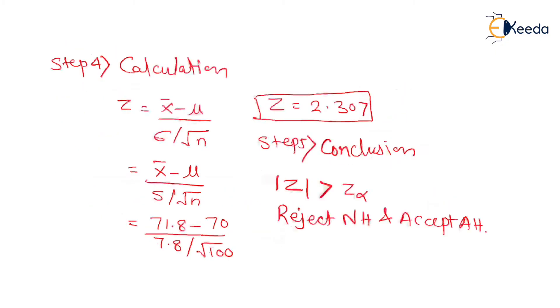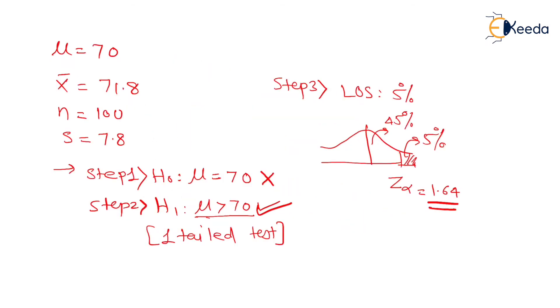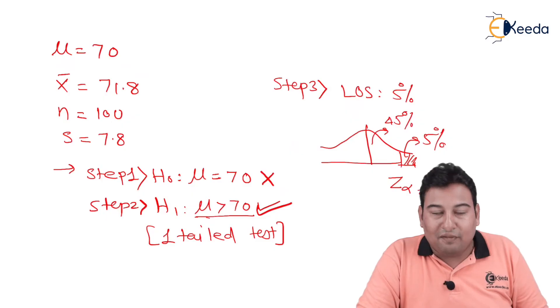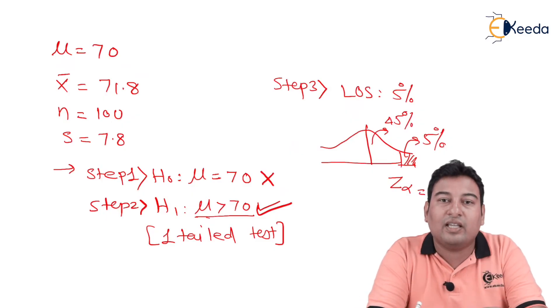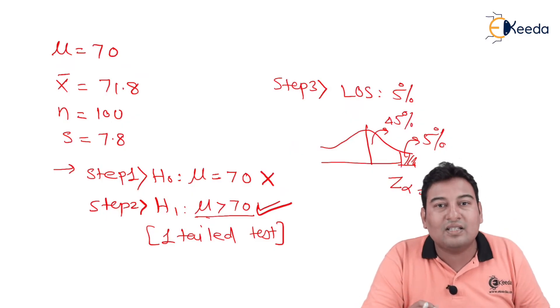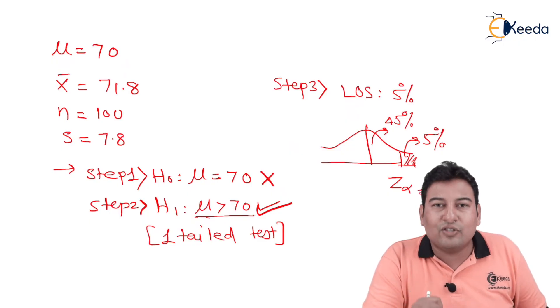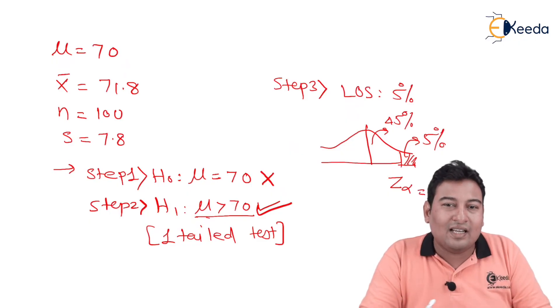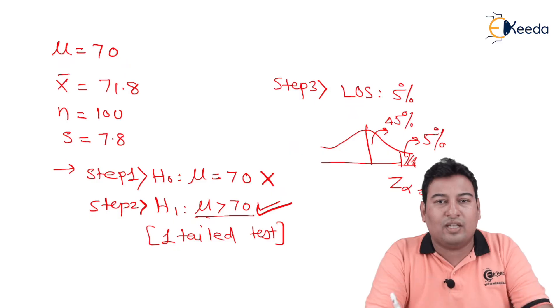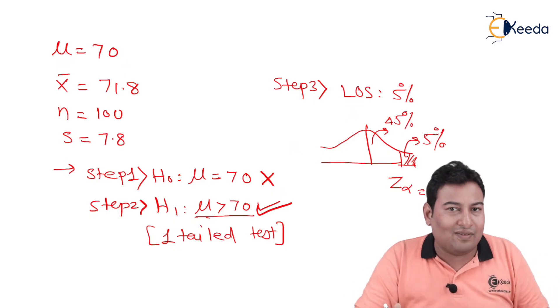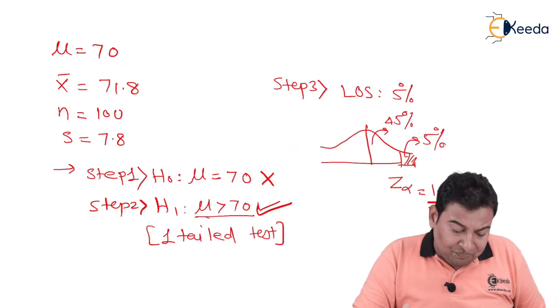Generally, what students think is we rejected NH, that means we rejected the problem. We rejected NH means we rejected the given problem, and in the problem it is asked it is more than 70 years. So students think we reject NH, we rejected the question, no, the answer is no, not more than 70 years. But this is not the case.